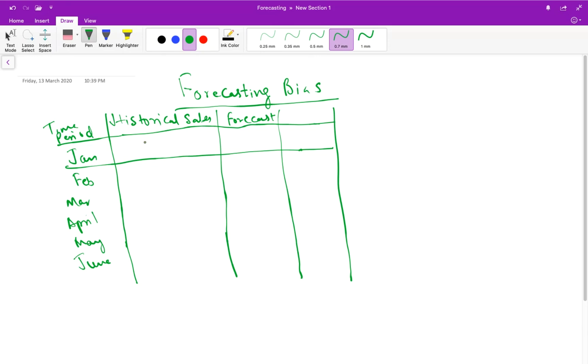Let's say my sales in the month of Jan, the historical sales, is 200 units, 150 units, 11 units, 100 units.